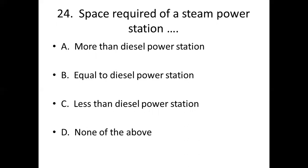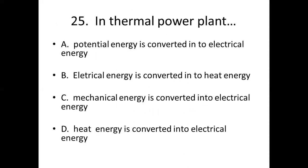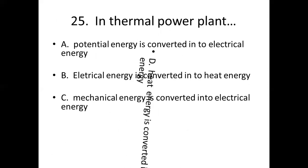Twenty-third bit: Minimum quantity of fuel is required in — Option A: nuclear power plant. Option B: thermal power plant. Option C: hydroelectric power plant. Option D: diesel power plant. Answer: Option A, nuclear power plant.